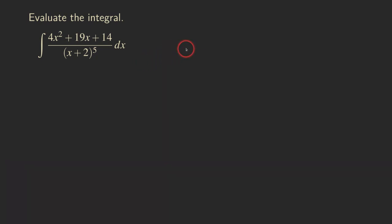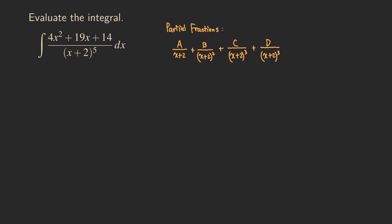If you were to write down the form of the partial fraction decomposition, then do you see what's going on? So let's just write it down and see. The partial fractions would be written as A over (x+2), then plus B over (x+2) squared, because that's a repeated linear factor. So you keep writing it from the first power all the way to the highest power in the problem, which is to the fifth power. So you get all this — A through E, with the last one being E over (x+2) to the fifth power.